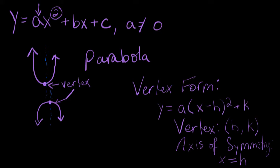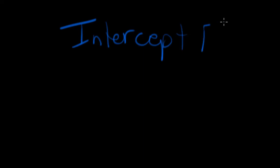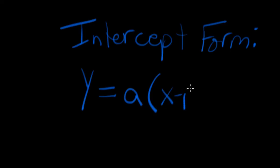The last form that you should be familiar with is called intercept form. Intercept form. Intercept form is y equals a times the quantity of x minus p times x minus q. This is your intercept form.